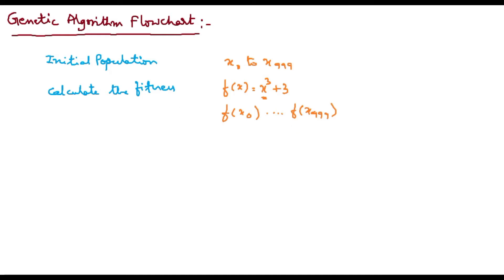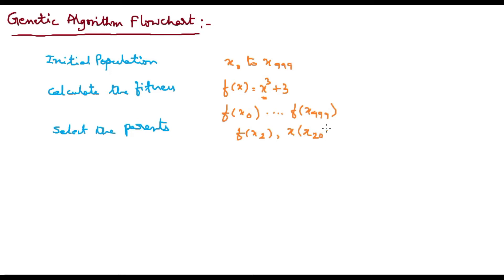Once I found all these things, I need to select the parents. Selection of parents means identifying the best two or three out of these, based on the fitness value — those who have the highest fitness value become the parents. For example, let me consider f(x2), f(x20), and f(x900) — maybe these three are having the highest values, so x2, x20, and x900 are the parents.